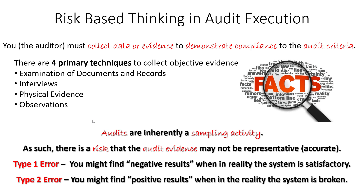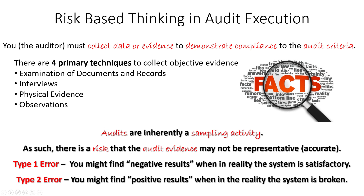The second type of error is consumer's risk — you might find a positive result, meaning your audit conclusion might be positive when in fact the reality is that the process or system you're auditing is broken. That's a Type II error; in acceptance sampling, you might accept bad product. One of the best things you can do to mitigate both types of errors is take more samples — more time, more interviews, more physical evidence. Focus your time on inherently high-risk activities, and mitigate these risks by spending more time on high-risk areas.